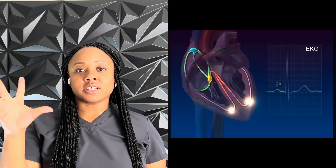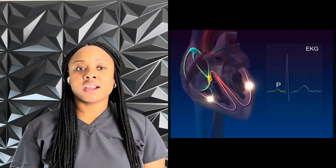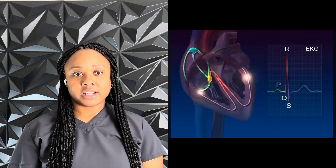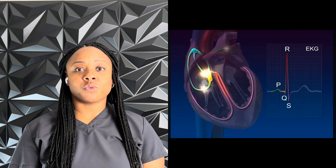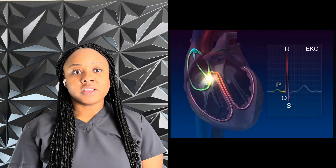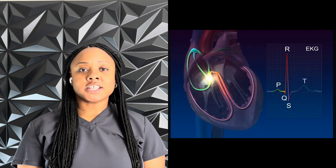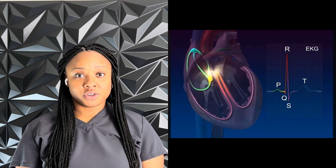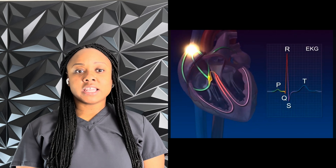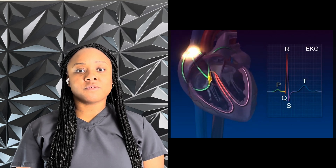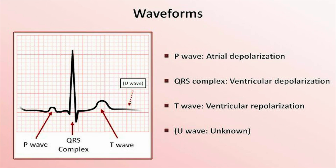P wave means the atria is contracting. The QRS means the ventricles are contracting. The T wave means the heart is relaxing. The PR interval is the time it takes for the signal to travel from the atria to the ventricles. And the QT interval is the time for the heart to contract and reset. Remember: P wave equals the top of the heart, QRS equals the bottom of the heart, and T wave equals the reset button.